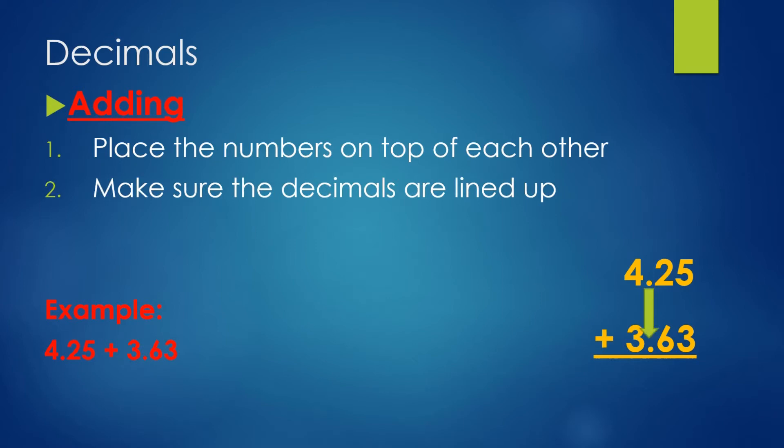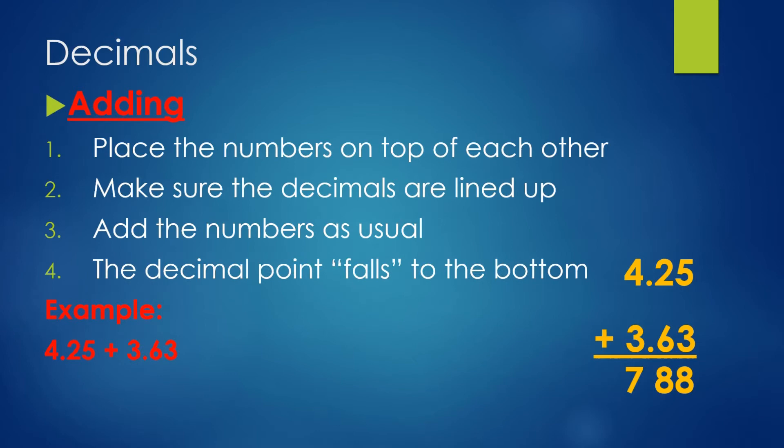For this example we'll use 4.25 plus 3.63. We place them on top of each other and make sure the decimals are lined up, then we add the numbers as usual. So little decimal, what's five plus three? That is eight. What's two plus six? Eight. And what's four plus three? Seven. So we place those numbers underneath and then the decimal point falls to the bottom. So we have our answer which is 7.88.